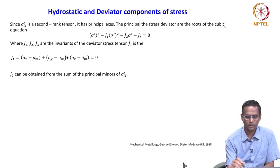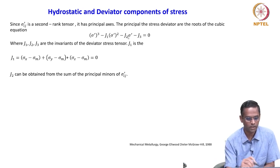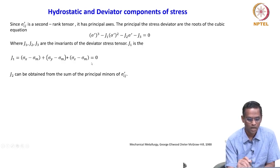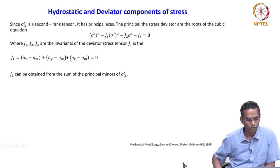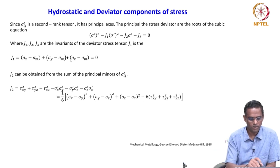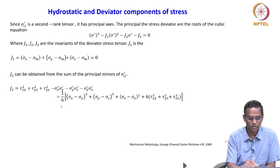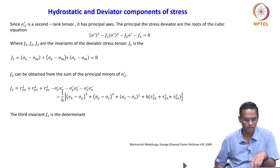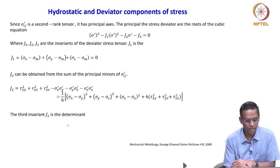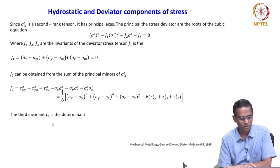Here, instead of i1, i2, i3, here it is j1, j2, j3 — the invariants of the deviator stress tensor. J1 is simply this, and j2 is this. This is a sum of the principal minors that we have already seen, and j3 is the determinant — the total determinant.